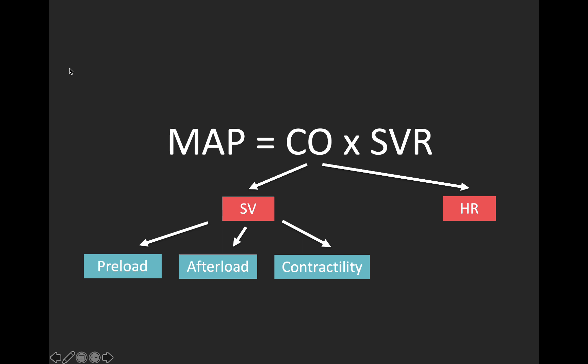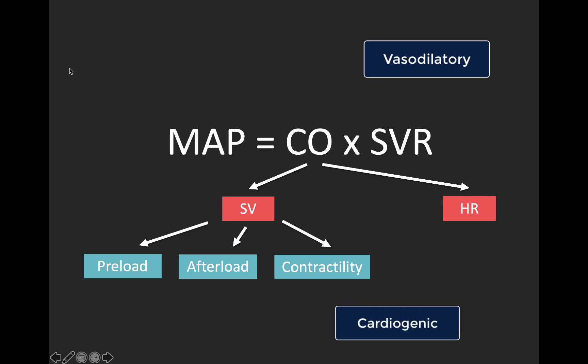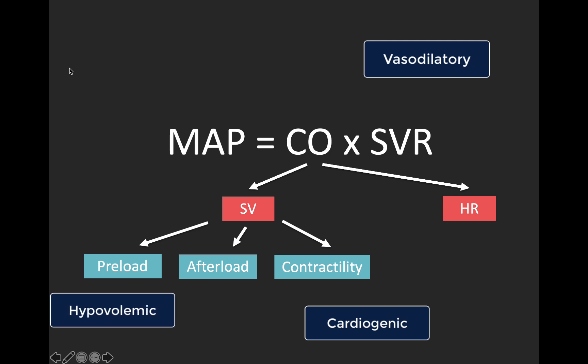In vasodilatory shock — sepsis, anaphylactic shock, neurogenic shock — the problem is very low SVR, systemic vascular resistance. In cardiogenic shock, the problem is obviously impaired contractility, or very rarely a very low heart rate. In true hypovolemic or hemorrhagic shock, the problem is low preload. In obstructive shock, the problem may be low left ventricular preload and/or high afterload, depending on the nature of the problem and the level of the obstruction. You can appreciate how by solving for cardiac output, we can much more easily figure out where in this schema our patient lies.